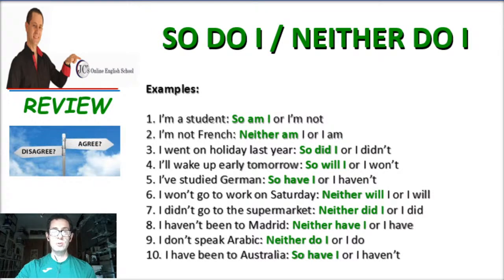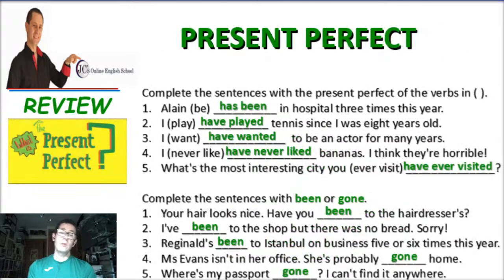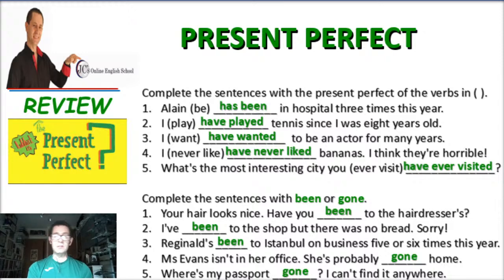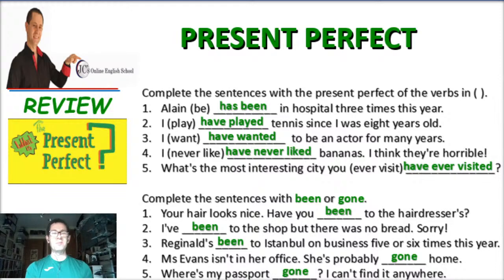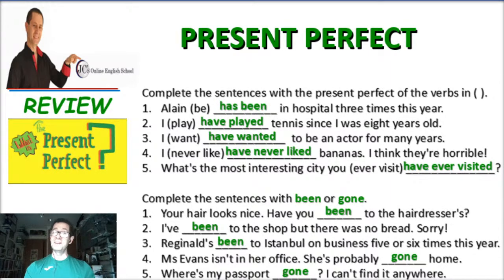Don't forget — pay attention to the auxiliary verb used in the first sentence. Of course, you can always say "me too" or "me neither" — that is the easiest way — but I prefer "so do I," "neither do I," "so will I," etc. Now, present perfect — we dedicated a full lesson to this because Mario requested it, and so am I, happy about it.